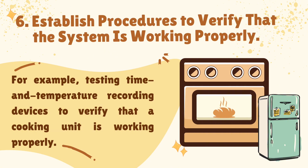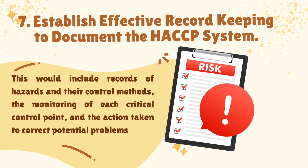Sixth, establish procedures to verify that the system is working properly — for example, testing time and temperature recording devices to verify that the cooking unit is working properly. And seventh, establish effective record keeping to document the HACCP system. This would include records of hazards and their control methods, the monitoring of each critical control point, and the action taken to correct potential problems.